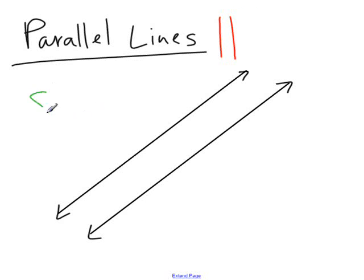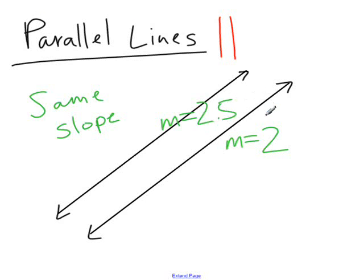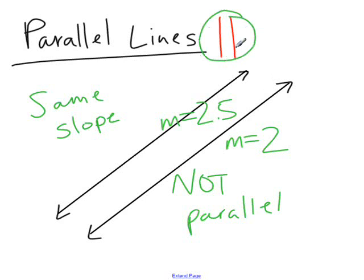Well, the big thing about parallel lines is this: they have the same slope if they are parallel. So let's say the slope of this bottom one, we'll call the slope 2. Then the slope of the top one, if they're parallel, had better be 2. Let's say for a minute that the slope of this one is 2.5. Then these would not be parallel. These have to have the same slope. Just so you know, this is the sign that means parallel.